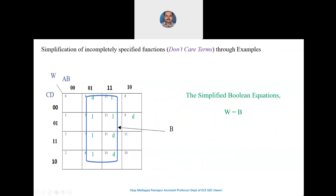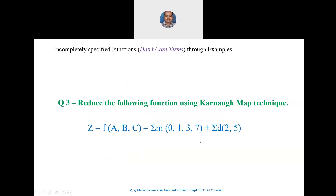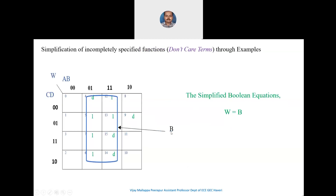The simplified boolean equation is: w = b. You can verify this — the value b is 0, 1, 1, 1, 1 across the grouped minterms, which is common to the group of eight minterms formed using the don't care conditions.